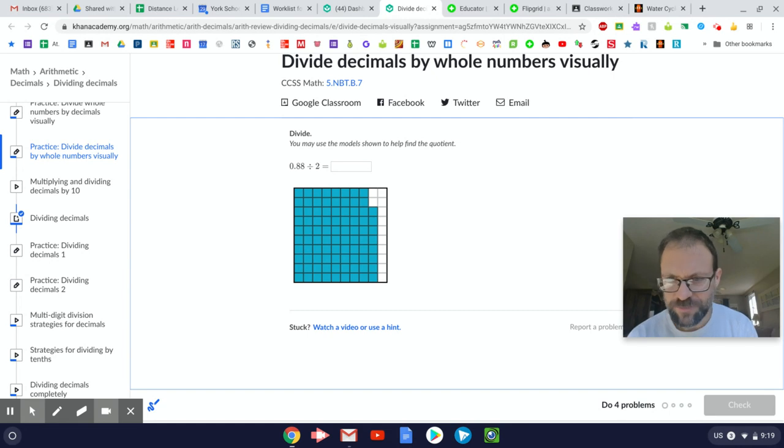So here we see a hundredths grid, right? And so I know that each one of these small boxes is one one-hundredth of the whole square, which means that ten of them make one tenth of the whole square. So one column is a tenth, or one full row is a tenth.